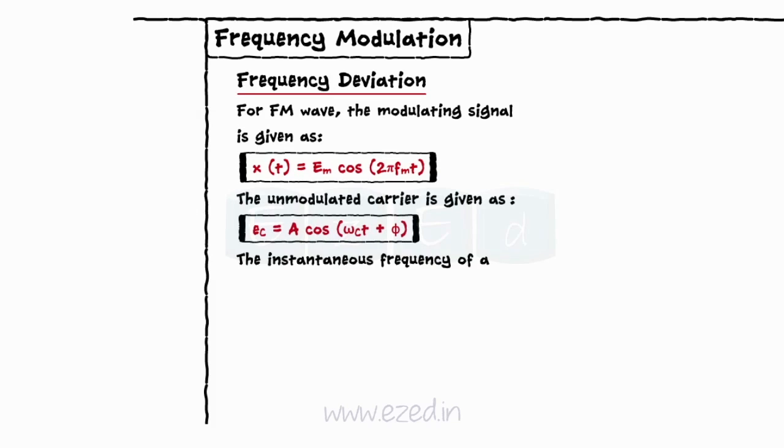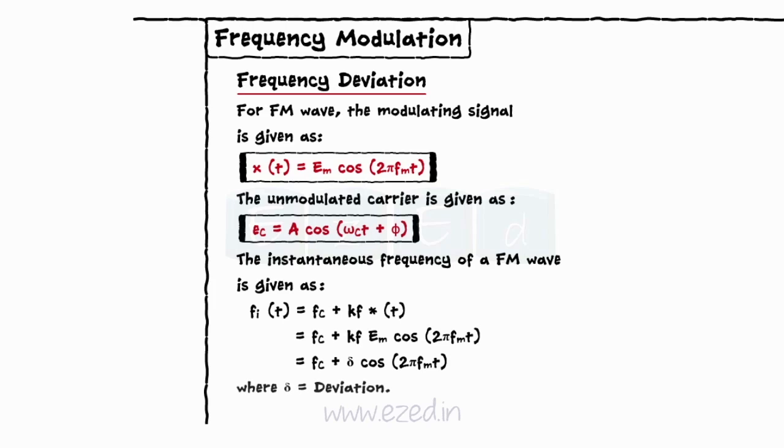The instantaneous frequency of a FM wave is given as Fit equals fc plus kf into Xt. Substituting the value of Xt, we get the equation Fit equals fc plus delta into cos 2 pi fm into t, where delta is the deviation.